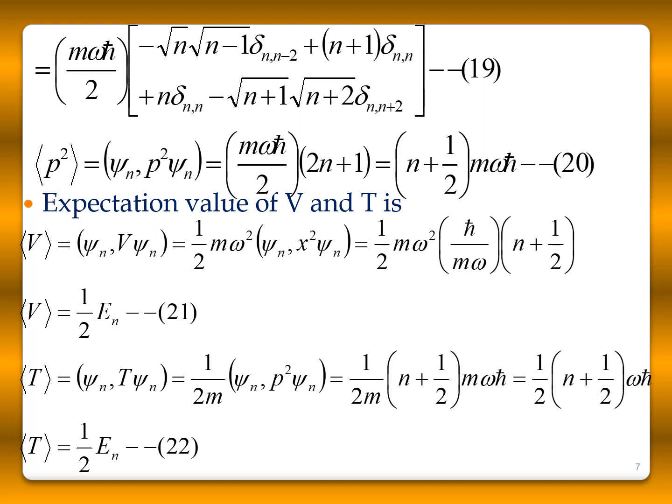The expectation value of potential energy is ½mω²⟨x²⟩ = ½mω² · (ħ/mω)(n + ½) = Eₙ/2. Similarly, the expectation value of kinetic energy is ⟨p²⟩/2m = (1/2m)(n + ½)mωħ = Eₙ/2. Thus both kinetic and potential energy expectation values equal half the total energy.